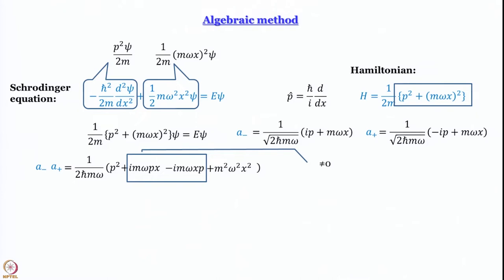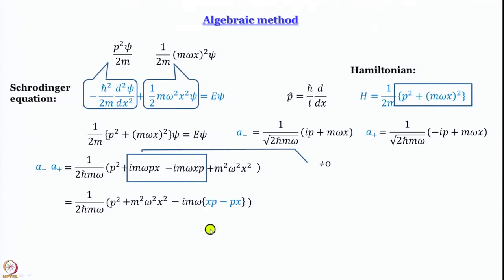Now if p and x were numbers, the term imωpx − imωxp would be zero. But as we have said, these are operators, so it is not zero. Let us tidy up: a⁻a⁺ = (1/2ℏmω) × [p² + m²ω²x²] + (1/2ℏmω)(−imω)(xp − px). Do you see a pattern? The first part looks like the Hamiltonian. The quantity xp − px is called the commutator of x and p.